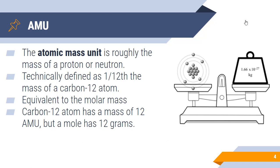Now, this is an equivalent value to molar mass. Remember that molar mass is the number of grams per mole, and that number is found on the periodic table. So, for example, carbon-12 atom has a mass of 12 AMU, but if we had a mole of carbon-12, it would have a mass of 12 grams. So understand that the numbers are equivalent values even though the units are not.